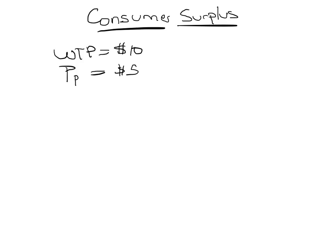This is the measure that economists use to determine how happy the consumer is after buying the pizza. So if the consumer was willing to pay $10 and the pizza costs $5, then after buying the pizza, the consumer is happier or has welfare equal to $5.